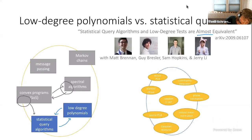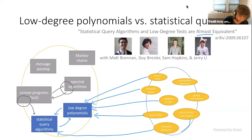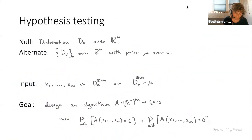For example, we're able to take tensor PCA lower bounds that already exist for low-degree polynomials and get statistical query lower bounds for tensor PCA. Same thing for random 3-SAT, sparse PCA, and a new non-bipartite version of planted clique. We're also able to take existing statistical query lower bounds for Gaussian mixtures and robust mean estimation to imply low-degree polynomial lower bounds. The setting we're interested in is hypothesis testing: we have a null distribution over R^n — for planted clique, this would be Erdős-Rényi random graphs — and we'll have an alternate distribution which is actually a collection of distributions D_v with a prior over the v's.